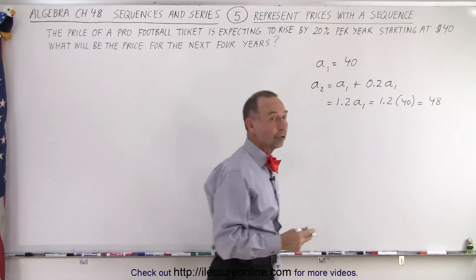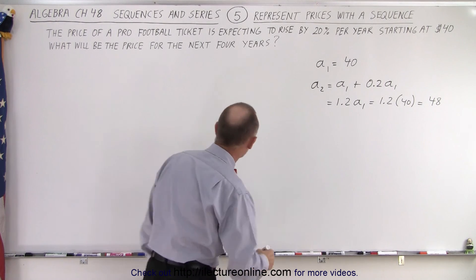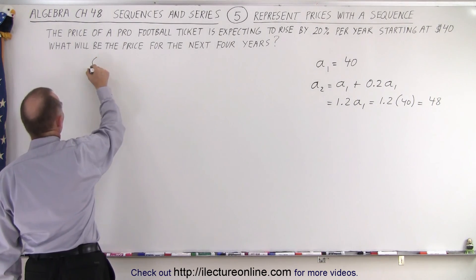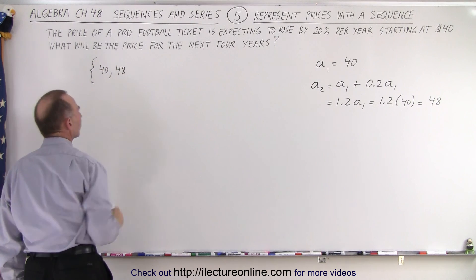So after one year, the ticket will now be 48, so a₂ is 48. And so if we're going to build up a sequence, you can see that the first term will be 40 and the second term will be 48.